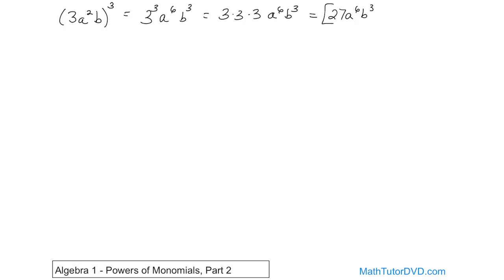Alright, then for our next problem, what if we have 2x squared times 2x to the 4th power? Now don't let this frighten you. What you have is a monomial raised to a power, but then it's multiplied by another monomial raised to a power.